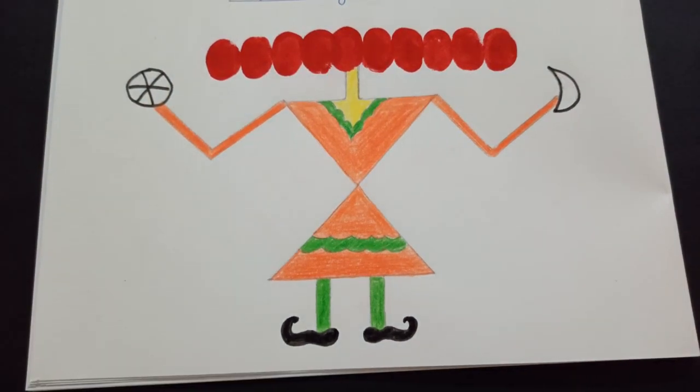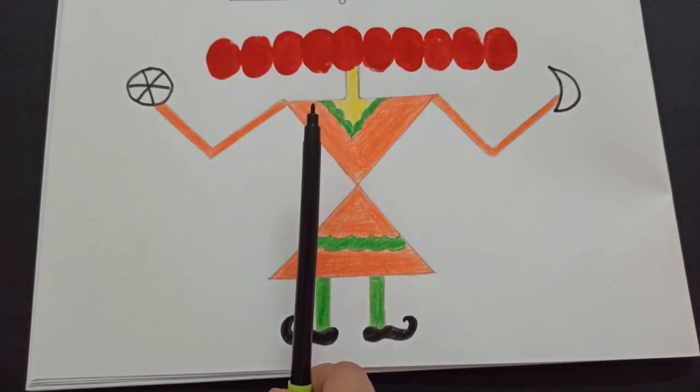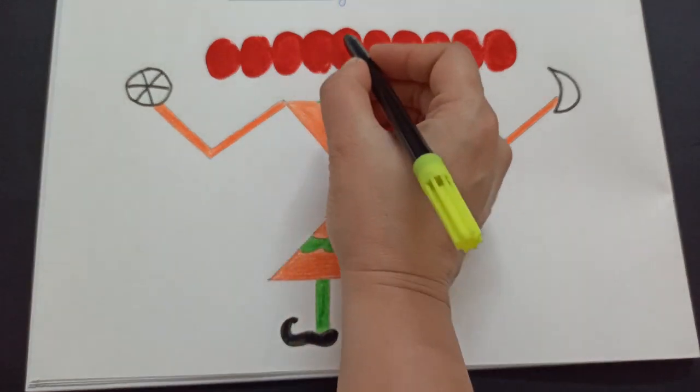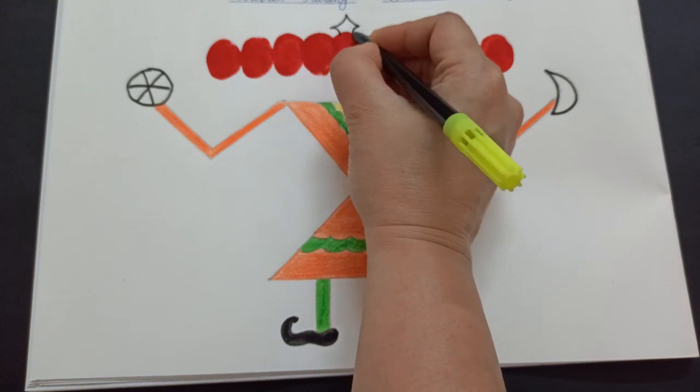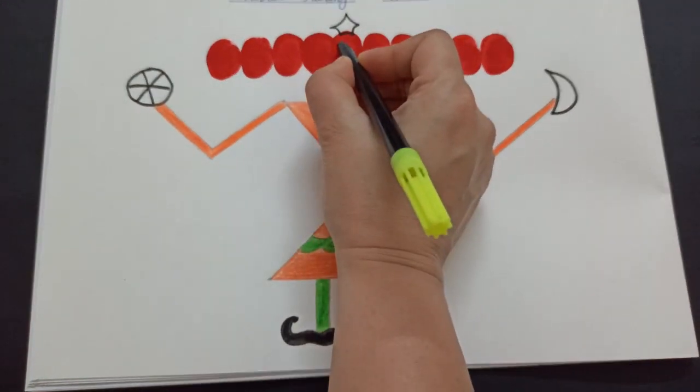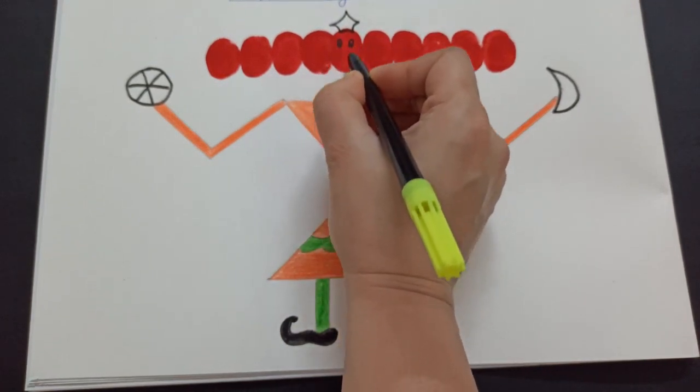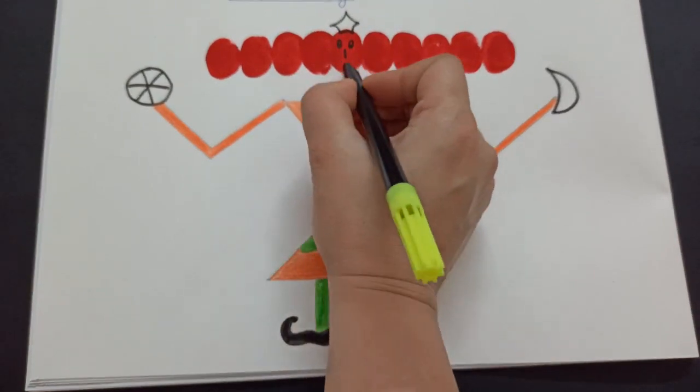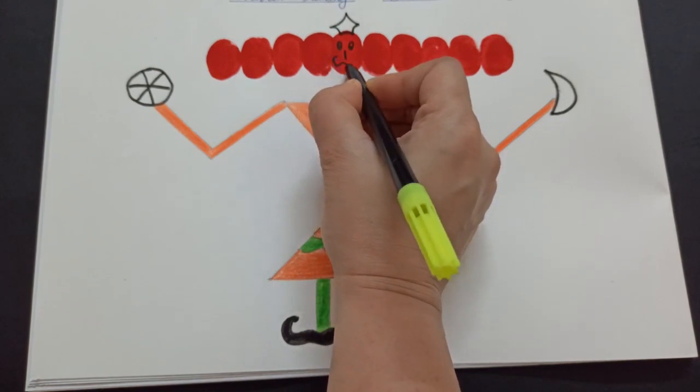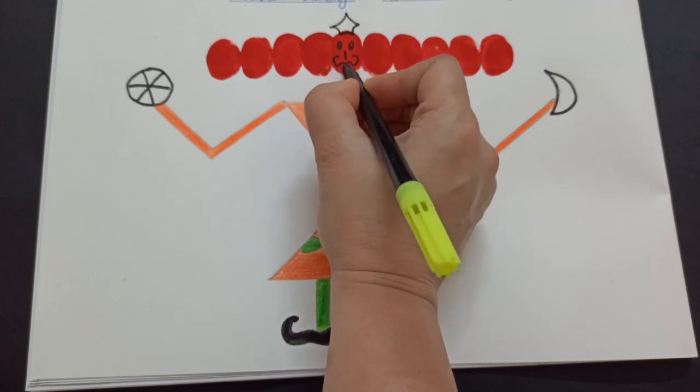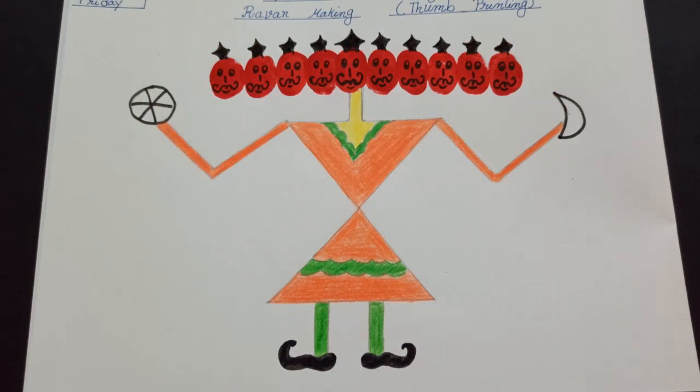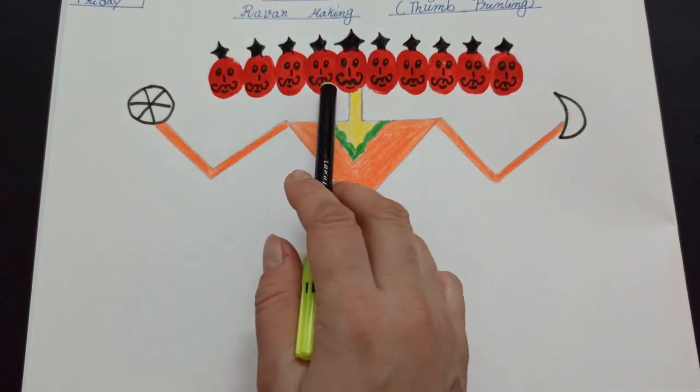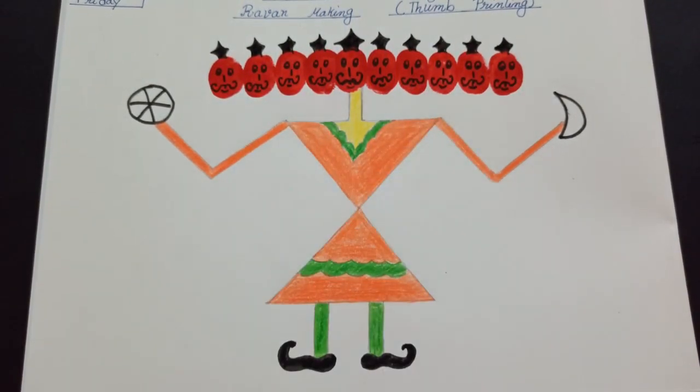Children, now let's draw the faces of Ravan. For that we need a black sketch pen. So we will start here. First we will make a face like this and then eyes, then nose. Children, similarly make faces of Ravana in all the heads. See, our Ravan is ready. Isn't it beautiful and colorful?